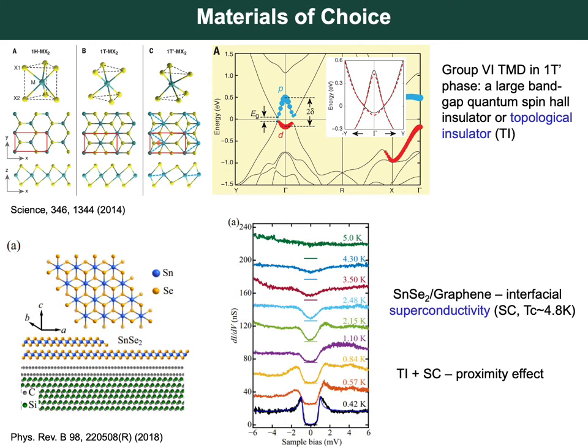The other class of material we are interested in is SnSe2, a main-group transition metal compound. SnSe2 grown on graphene has been shown to exhibit interfacial superconductivity emerging at about 5K, enabled by interfacial charge transfer. The combination of a topological insulator and a superconductor provides a great template to study the proximity effect.